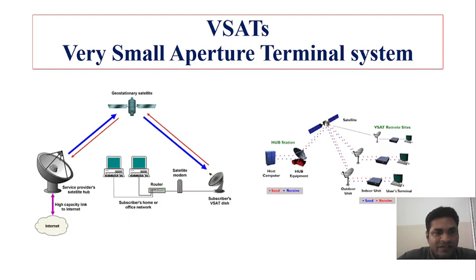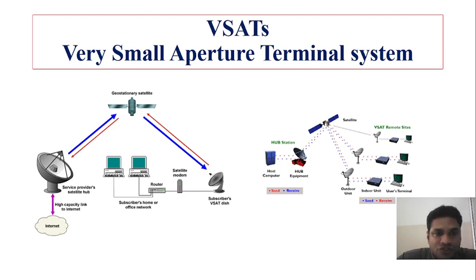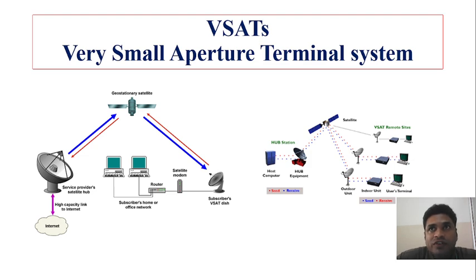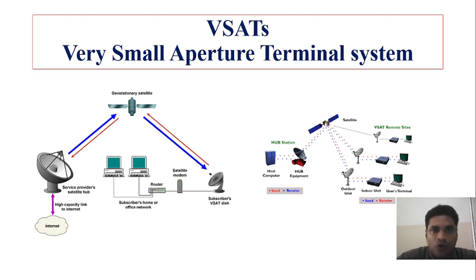The VSAT system works as follows: a geostationary satellite over space provides a link to the subscriber dish. A high-capacity internet signal is sent to the service provider, who uplinks the signal to the geostationary satellite. The satellite regenerates and sends the signal back to the subscriber dish, where it is processed at their local office. On the right side, you can see how the hub station is connected to the satellite and how links are provided to different VSAT remote sites around the globe.